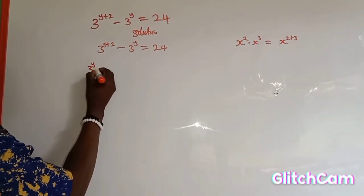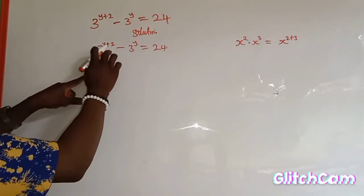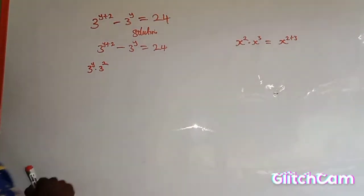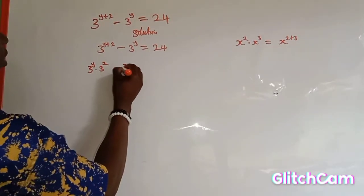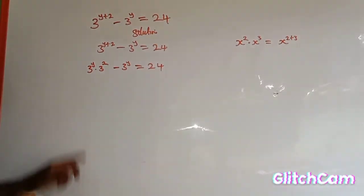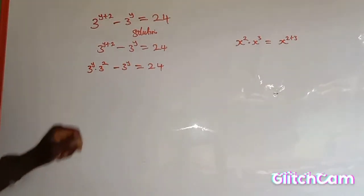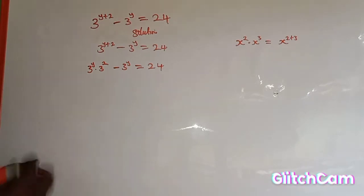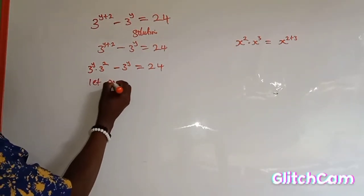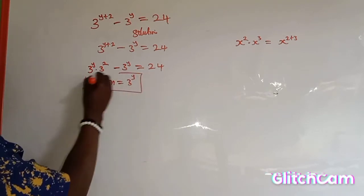So 3 to the power of y plus 2 can be written as 3 to the power of y, multiplied by 3 to the power of 2. Evaluating this according to the law of indices, then minus 3 to the power of y, equals 24.